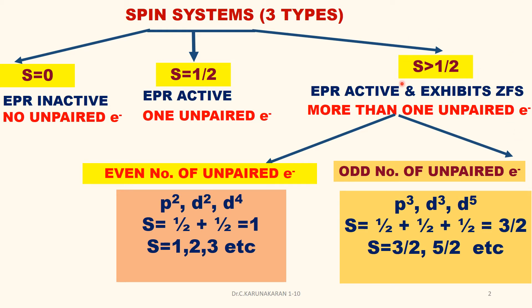There are two cases for S greater than 1/2: even number of unpaired electrons and odd number of unpaired electrons. For even number of unpaired electrons, for example P2 organic species, transition metal complexes with D2 or D4 configurations — for example D2: S equal to 1/2 + 1/2 = 1, or D4: S = 1, 2, 3, etc.